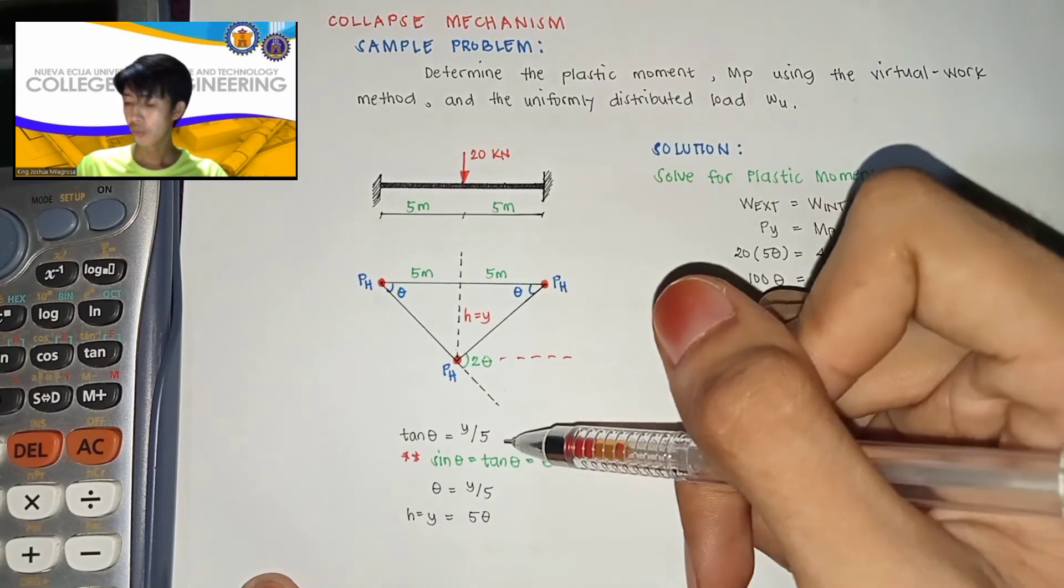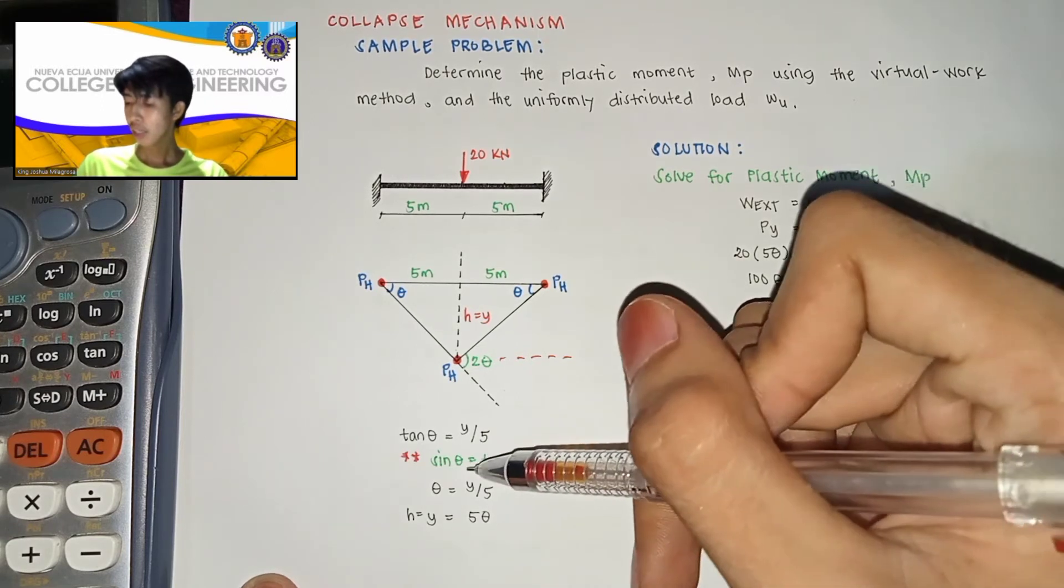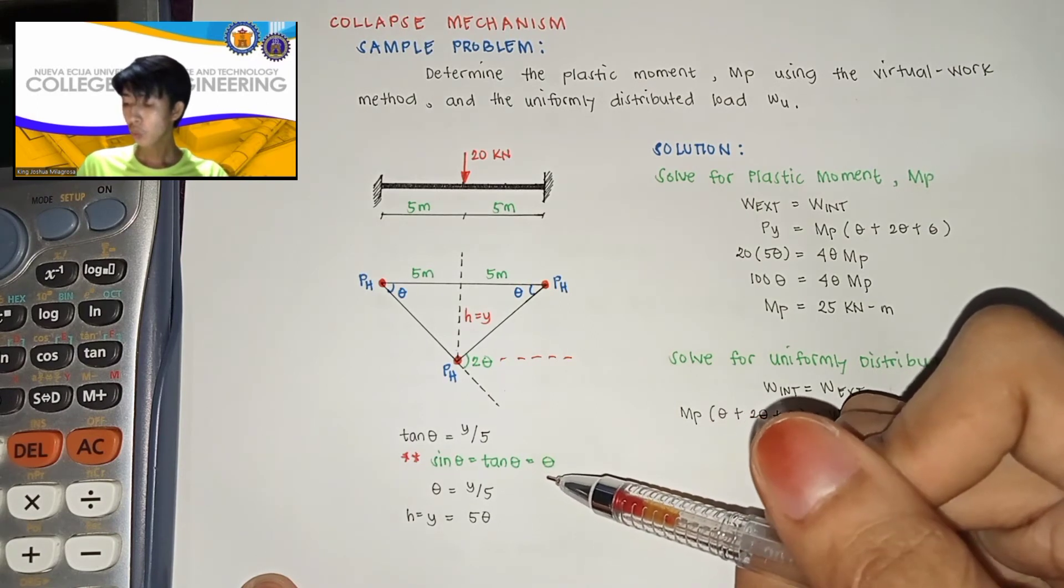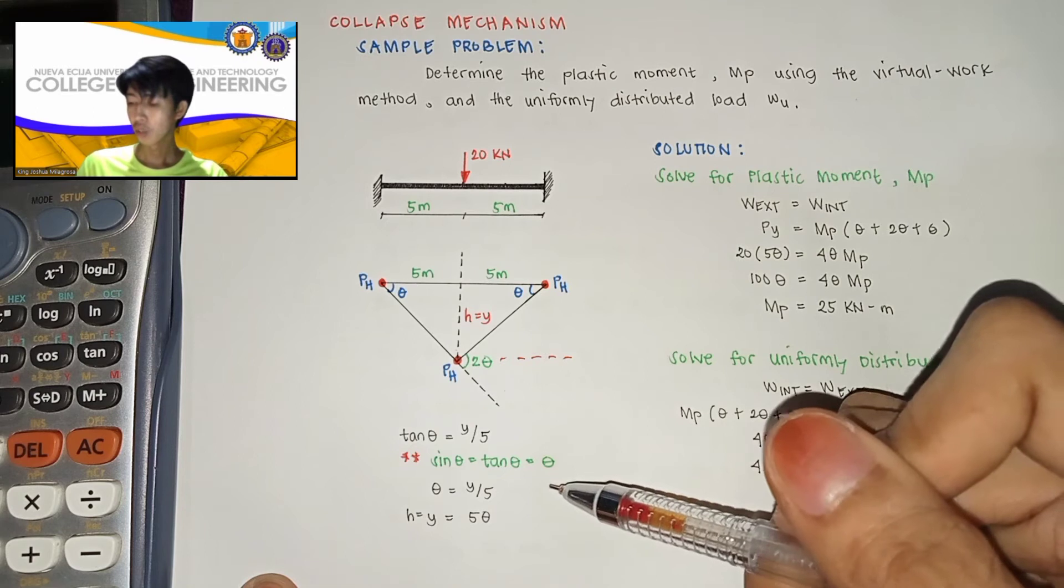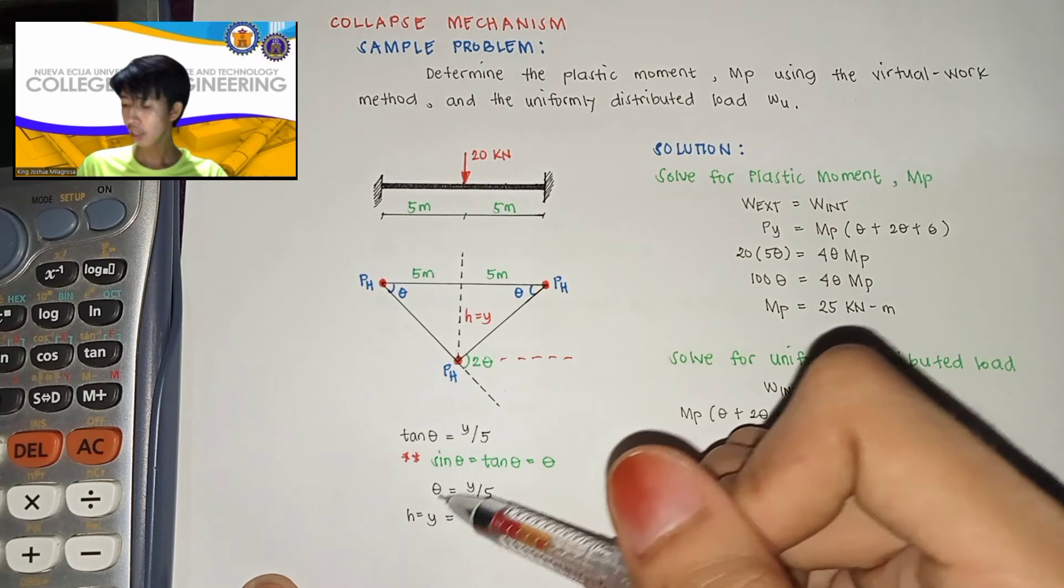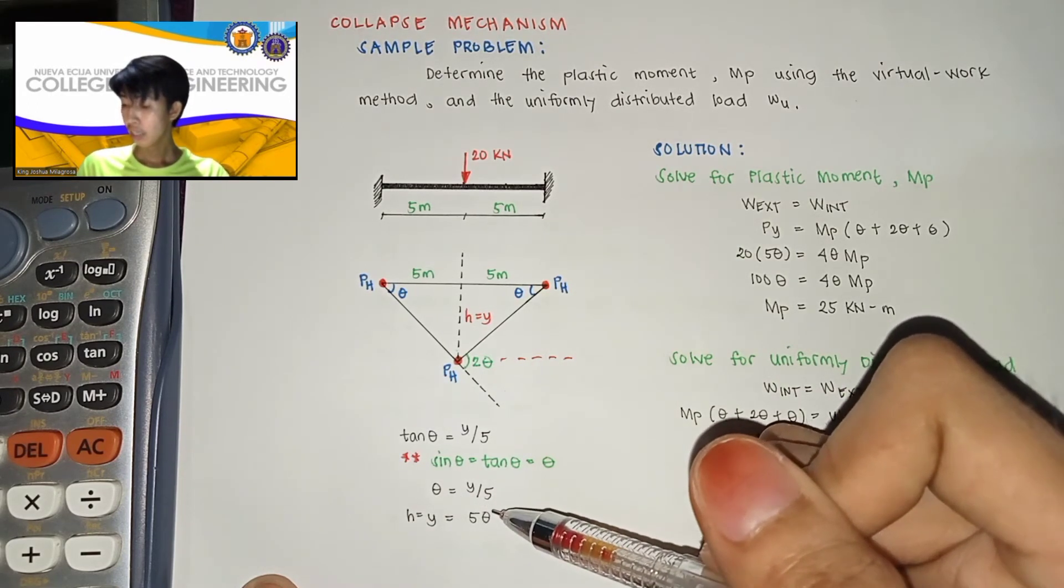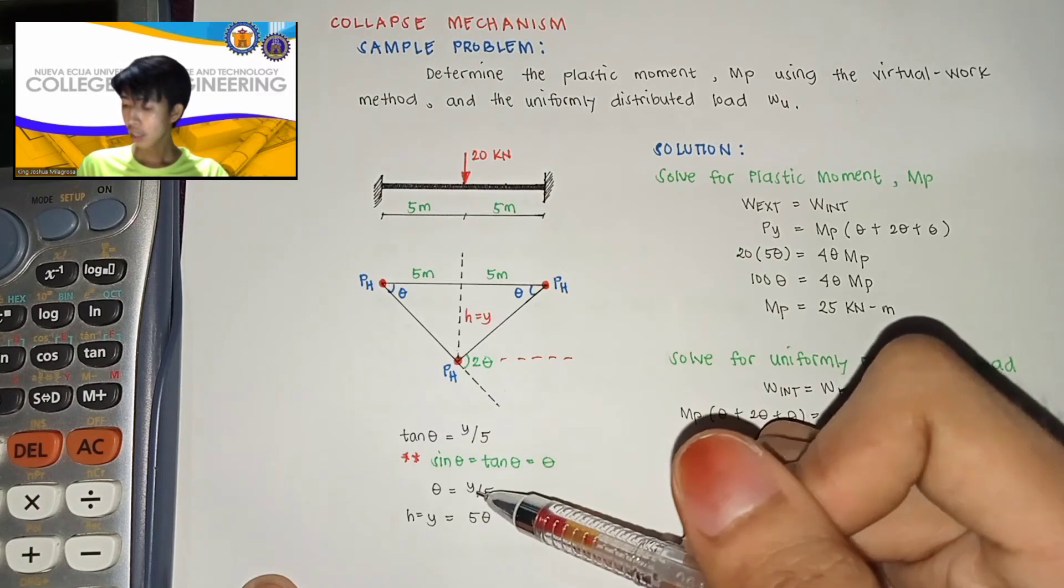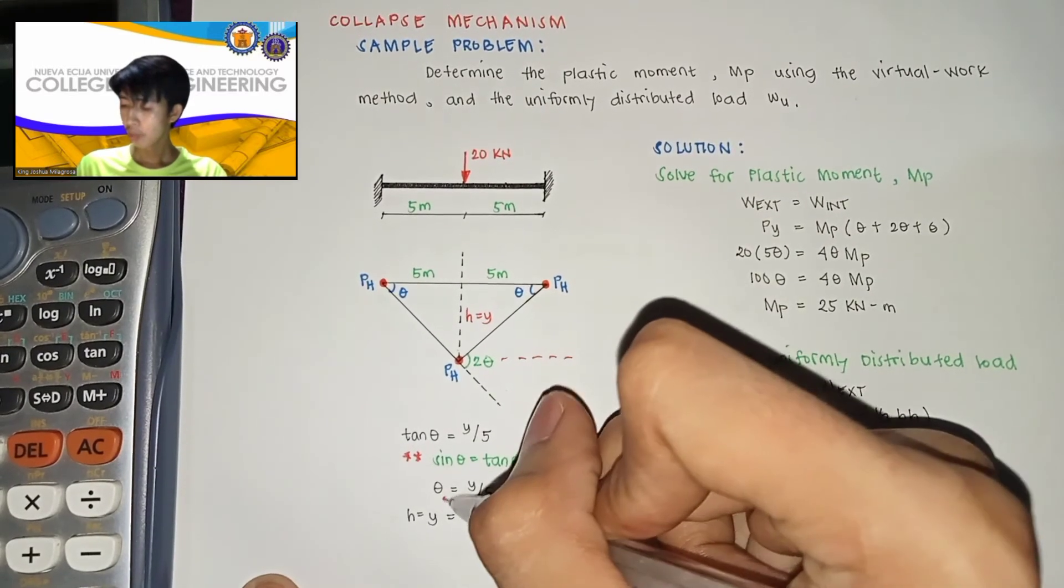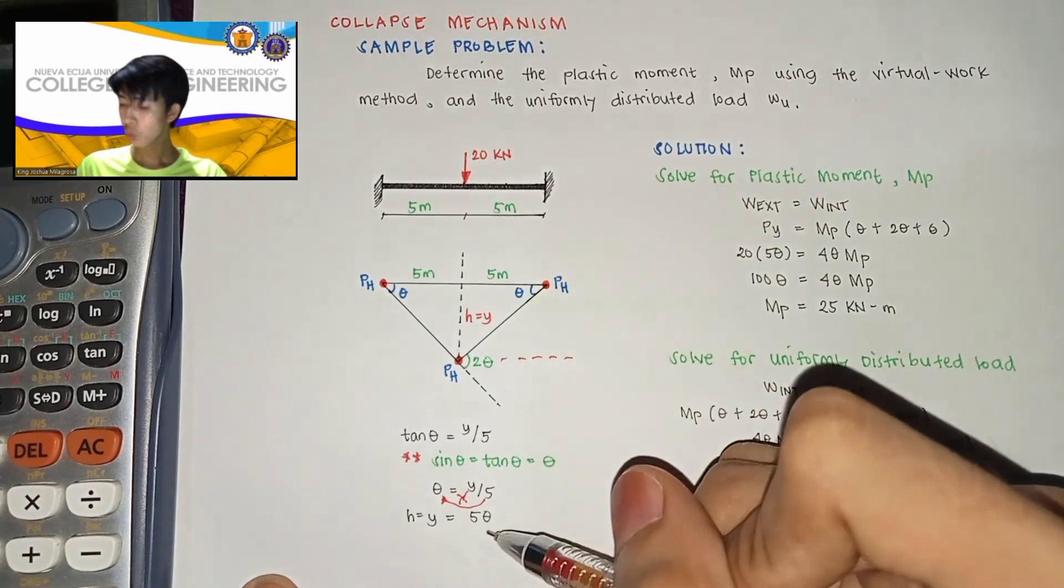According dun sa small angle theory, yung sin theta is equal yan sa tan theta, which is equal to theta. So si tan theta is equal yan sa theta, so theta is equal to y over 5. Then i-multiply natin si 5 dito sa theta, so y or yung height is equal to 5 theta.